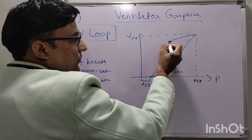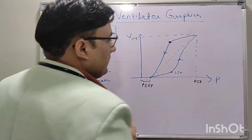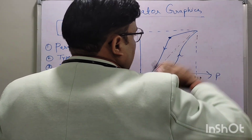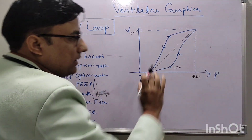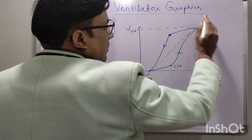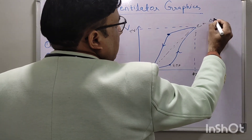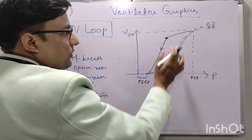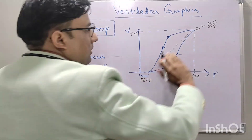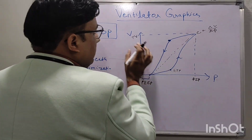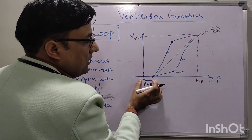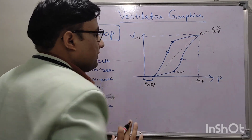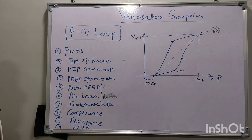During expiration, after reaching a certain point, volume decreases rapidly — this is the upper inflection point. After the upper inflection point, volume decreases rapidly. The slope of this curve is called the compliance line; compliance is delta-V upon delta-P. So the key parts of this graphic are: lower inflection point, upper inflection point, compliance line, PIP, tidal volume, PEEP, and inspiratory and expiratory phases.